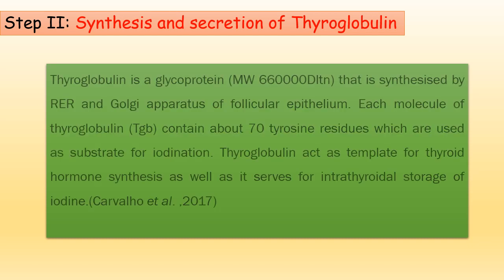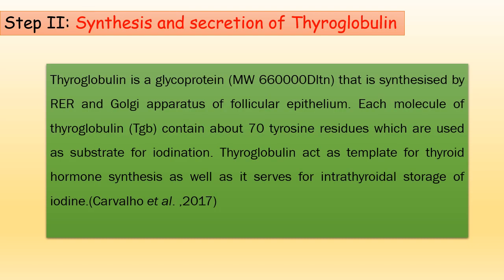The synthesis and secretion of thyroglobulin takes place simultaneously with the trapping of iodine. Thyroglobulin is a glycoprotein synthesized by the rough endoplasmic reticulum and Golgi apparatus of the follicular epithelium. Each molecule of thyroglobulin contains about 70 tyrosine residues which are used as substrate for iodination. Thyroglobulin acts as a template for thyroid hormone synthesis and also serves for intrathyroidal storage of iodine.